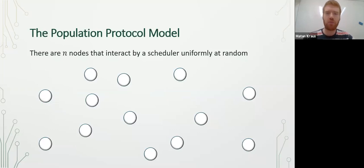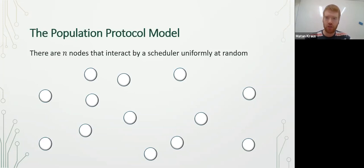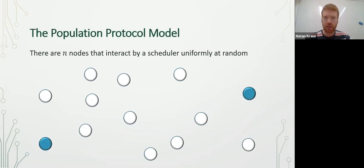In the population protocol model, there are N agents or nodes that interact with each other in a pairwise manner. There is a scheduler that on each round selects two nodes uniformly at random. So for example, for the first round, these two nodes are selected, and for the second round, these two nodes, and so on and so forth.